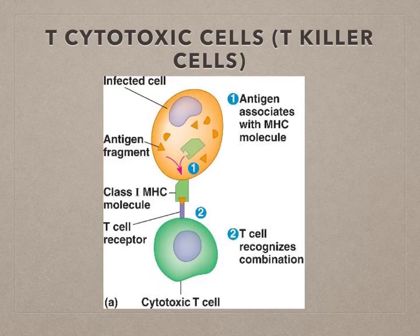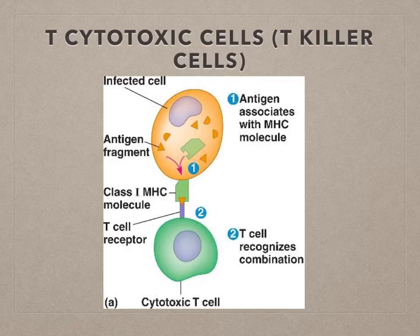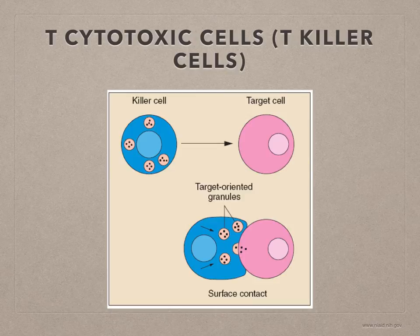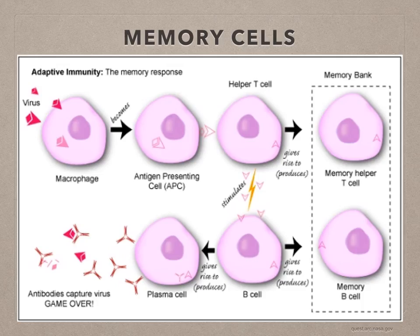T cytotoxic or T killer cells kill body cells that have been invaded by non-self material. They search the body for invaded body cells displaying foreign antigens, and may also be helped by cytokines from T helper cells. The T killer cell recognizes the antigen-presenting cell, binds to it, and then secretes chemicals into that body cell to kill it. Both T helper and T cytotoxic cells produce their own type of memory cells, which circulate in the blood in readiness to respond to further invasions by the same pathogen.